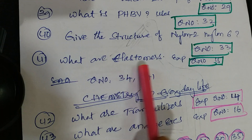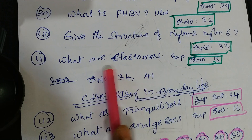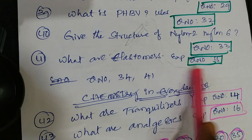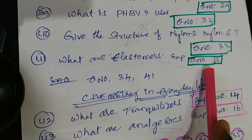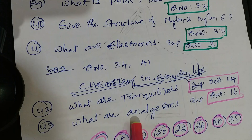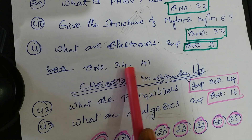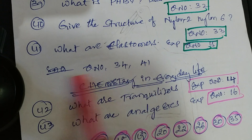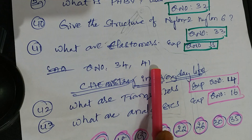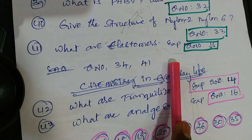What are elastomers - give an example - that is question number 15 from material, and question numbers 31 and 41 also. These questions are also present in SAQs.